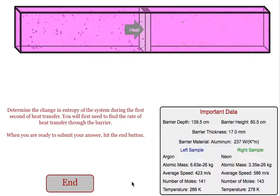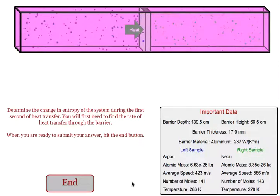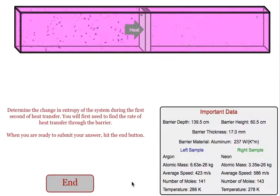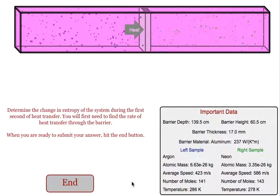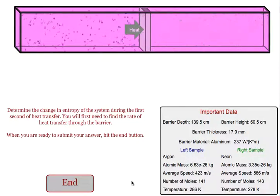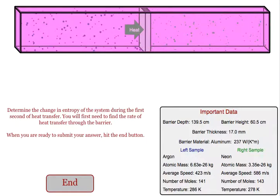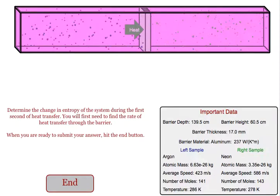In this program, we're trying to determine the change in the entropy of a system during the first second of heat transfer. First, we must find the rate of heat transfer through the barrier.